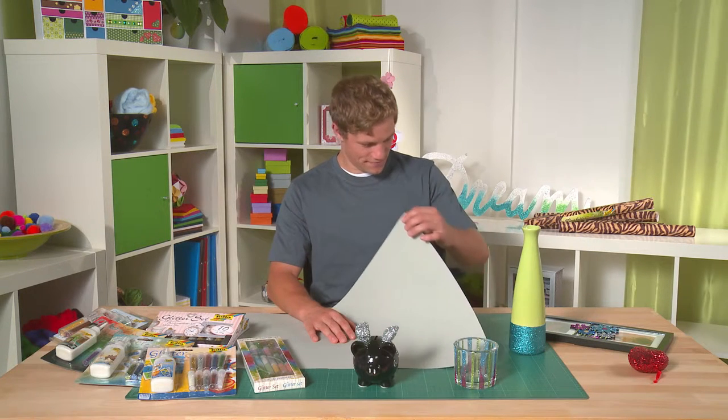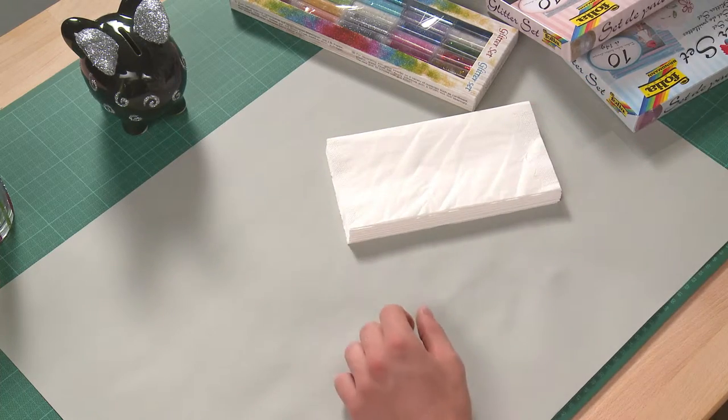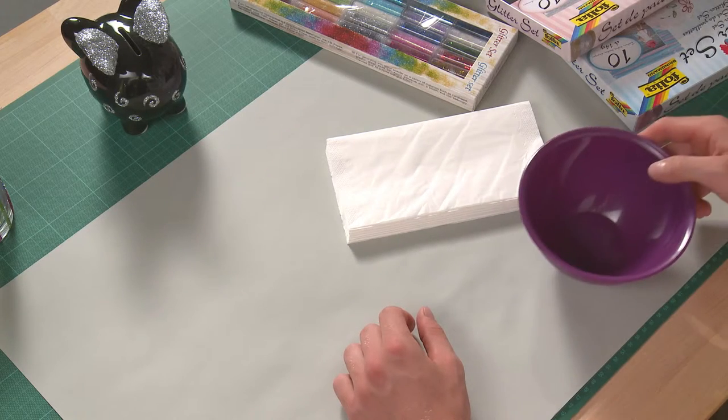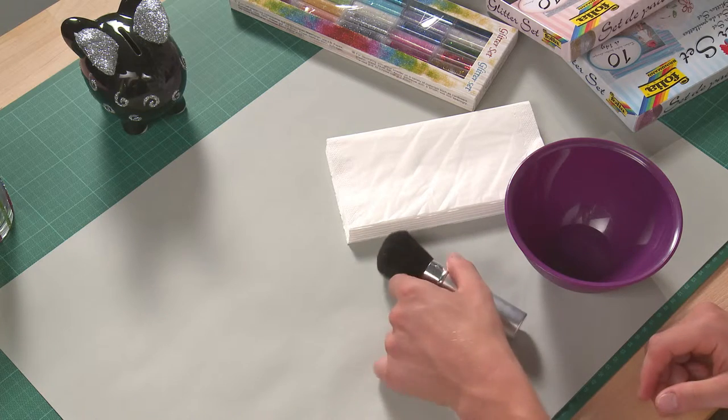To protect the surface, lay down paper or a similar material. Additionally, use paper towels in case something goes wrong and a sheet of paper or a bowl to collect the glitter as well as a soft brush for brushing.